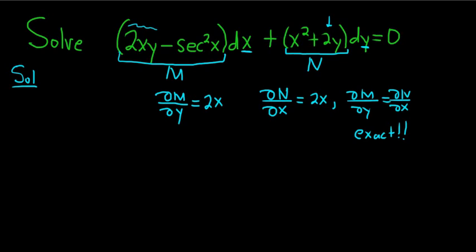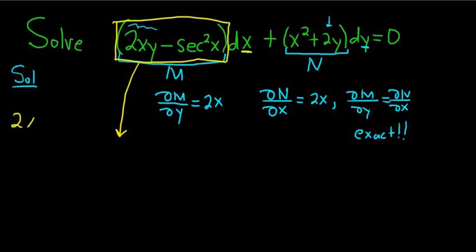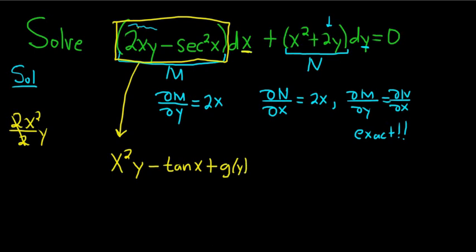The really quick, easy way is you just integrate both pieces. Let's start by integrating this one — there's an x here, so we integrate with respect to x. The y is constant, so we get 2x squared over 2y, which is just x squared y. And we're integrating secant squared — what's a function whose derivative is secant squared? Well, the derivative of tangent is secant squared. So this gives us minus tangent of x. Since we're integrating with respect to x, we add an unknown function of the other variable: g of y.